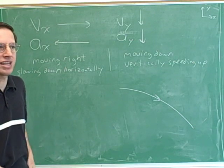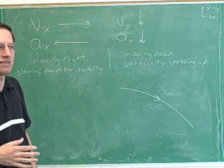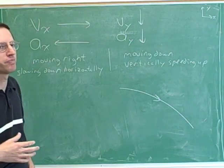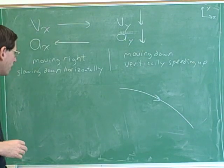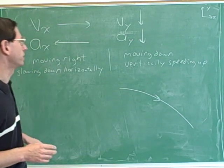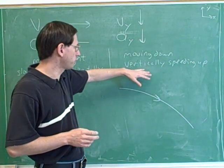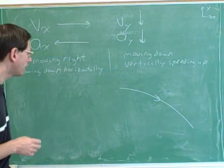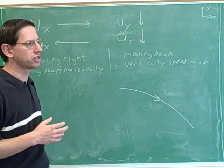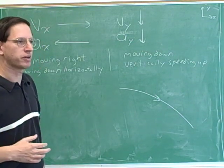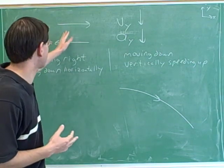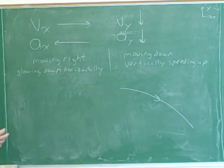The word 'separately' is actually one of the most important words in physics. A lot of tricks in physics are based on thinking about the different components separately. Here we thought about the horizontal component separately from the vertical, and the vertical separately from the horizontal. As long as you think about the two components separately, two-dimensional motion shouldn't be that much harder than one-dimensional motion — because it's really just doing two examples of one-dimensional motion: one for the horizontal, and one for the vertical.